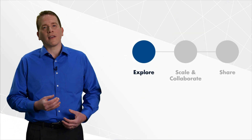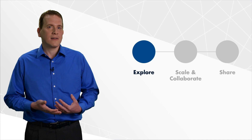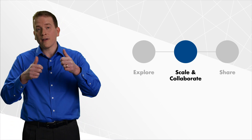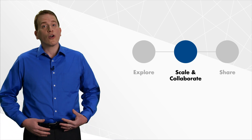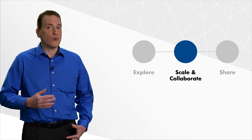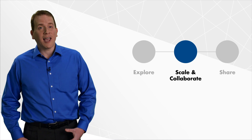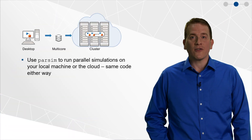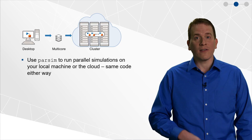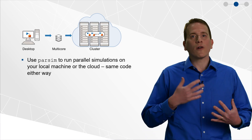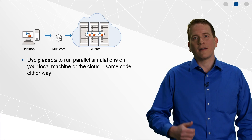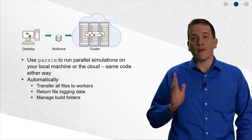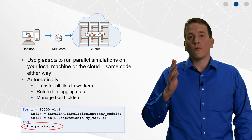So we've gone over some things that will help you explore through your designs. Now, as designs evolve, they grow both in size and complexity, which means you need to scale up your work and collaborate with others. The good news is that both MATLAB and Simulink grow with you as your needs grow. A great example of this is running multiple simulations in parallel. Back in 2017, we released a feature called ParSim that makes it easy to run parallel simulations on your local multi-core machine or on the cloud with a full cluster of machines — it's the same code either way. ParSim automatically takes care of things like file transfer, logging, and managing build folders, all with just a few lines of code.